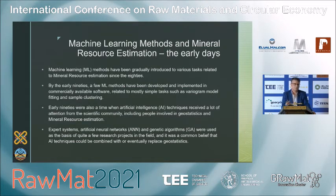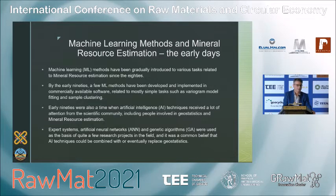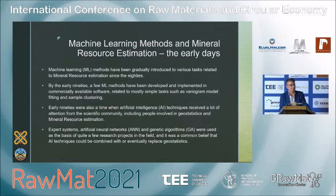Some overview of how this application developed over the years: machine learning techniques have been gradually introduced to various tasks related to mineral resource estimation since the 1980s. You could say that the 80s and early 90s were like the first renaissance of machine learning, especially for mining. By the early 90s, a few ML methods had been developed and implemented in commercially available software, mostly related to simple tasks such as variogram model fitting and sample clustering. Early 90s were also a time when artificial intelligence techniques received a lot of attention from the scientific community, including people involved in geostatistics and mineral resource estimation.